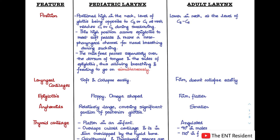The first point is the position of the larynx. In the pediatric larynx, it is positioned higher up in the neck, almost at the level of the glottis being opposite to C3 or C4 at rest, reaching C1 or C2 during swallowing. This high position allows the epiglottis to meet the soft palate, creating a nasopharyngeal channel for nasal breathing during suckling.